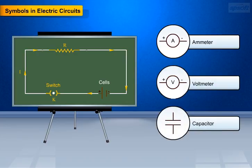Based on these components, connection circuits are classified into two types, i.e. series and parallel circuits.